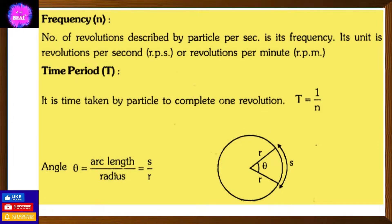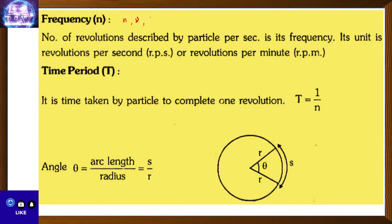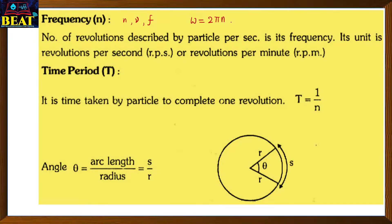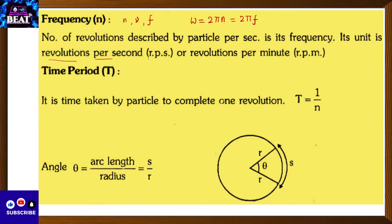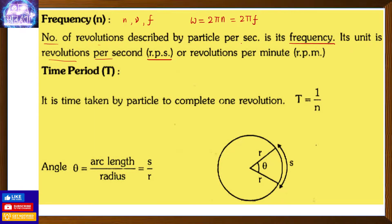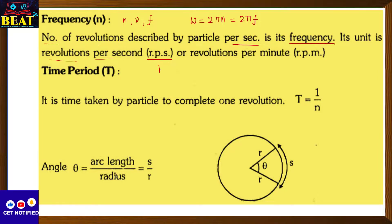Now let's look at the terminology of circular motion. Frequency is denoted by small 'n', or 'f', or sometimes 'ν' (nu) in modern physics. It is related to angular velocity as omega equals 2πn, or omega equals 2πf. Frequency means the number of revolutions completed in one second, also called revolutions per second (RPS). Its unit is hertz (Hz), which is the same as inverse seconds (s⁻¹).